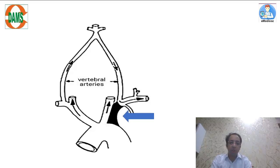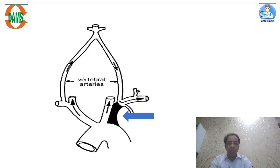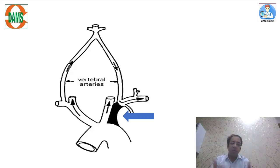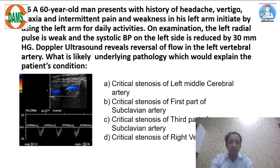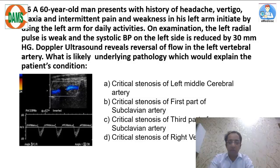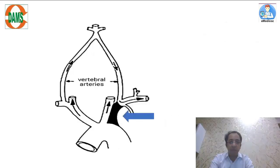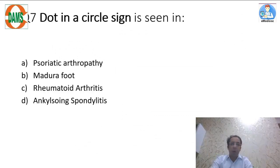The subclavian artery, because of proximal stenosis, is stealing blood away from the vertebral artery. The vertebral artery on the same side shows reversal of blood flow. This explains why the patient had posterior fossa symptoms like vertigo. The finding on Doppler is reversal of blood flow in the vertebral artery. The answer is critical stenosis of the first part of the subclavian artery.